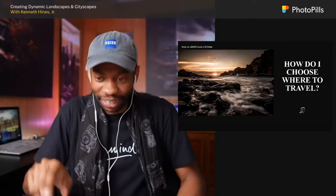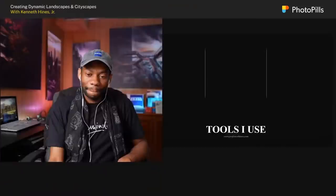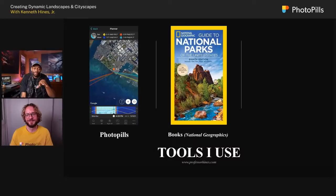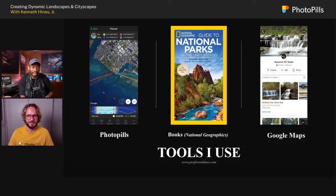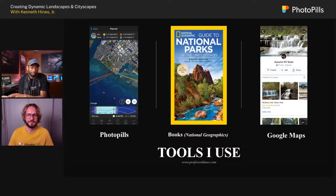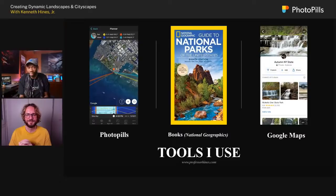So how do I choose where to travel? Some of the tools I use are PhotoPills, National Geographic books, and Google Maps. PhotoPills is important because anywhere I go, I need to know exactly where the sun will rise and set, so I don't go to a location that isn't ideal. I can advance the time in the app — if I know I'm going somewhere in a month, I can see where the sun will be in the morning and evening, and where the moon will be, then map my locations based on that information.